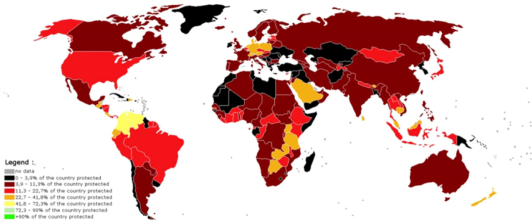Through its World Commission on Protected Areas, the IUCN has developed six protected area management categories that define protected areas according to their management objectives, which are internationally recognized by various national governments and the United Nations. The categories provide international standards for defining protected areas and encourage conservation planning according to their management aims.